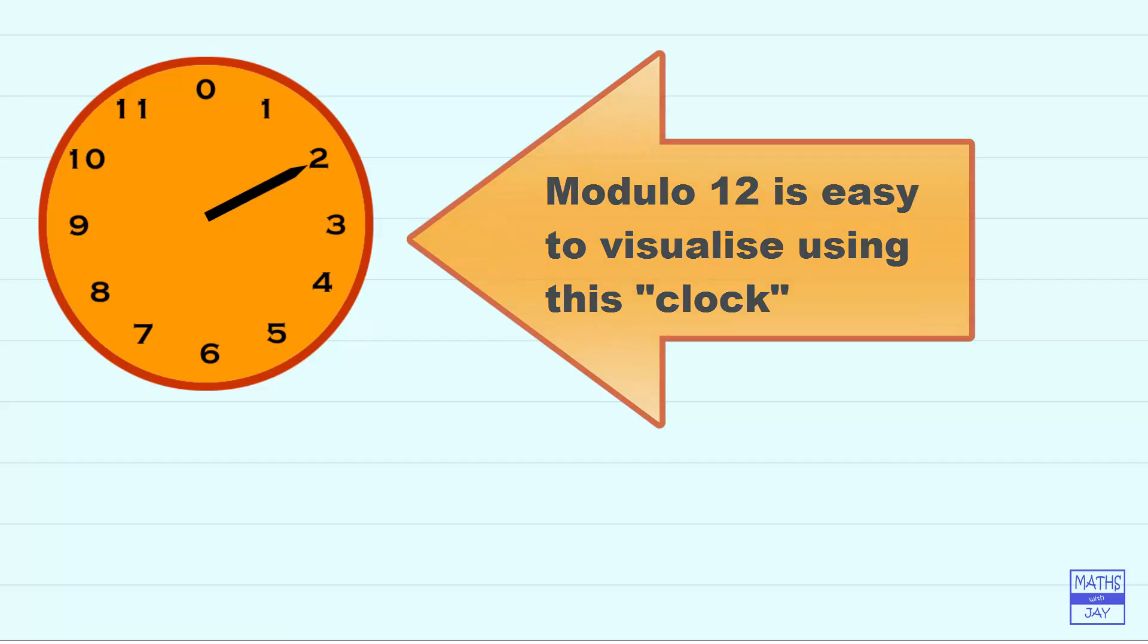I guess you've noticed there's a couple of differences. You can see that instead of a 12 there's a zero at the top of the clock. And also there's only one hand. Most clocks have two if not three hands.